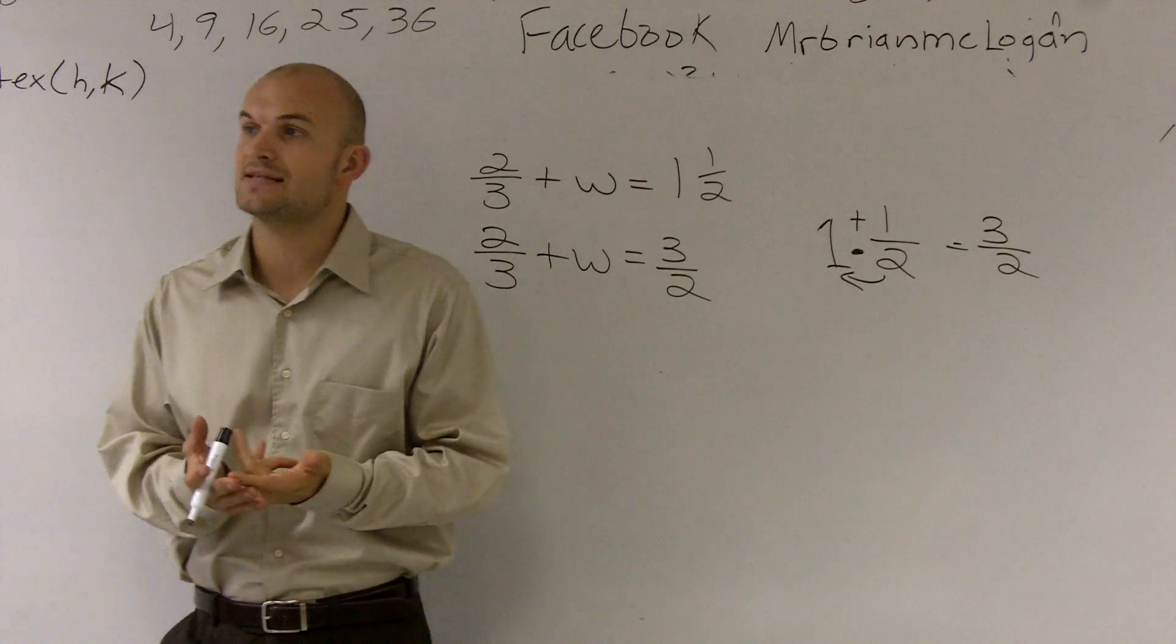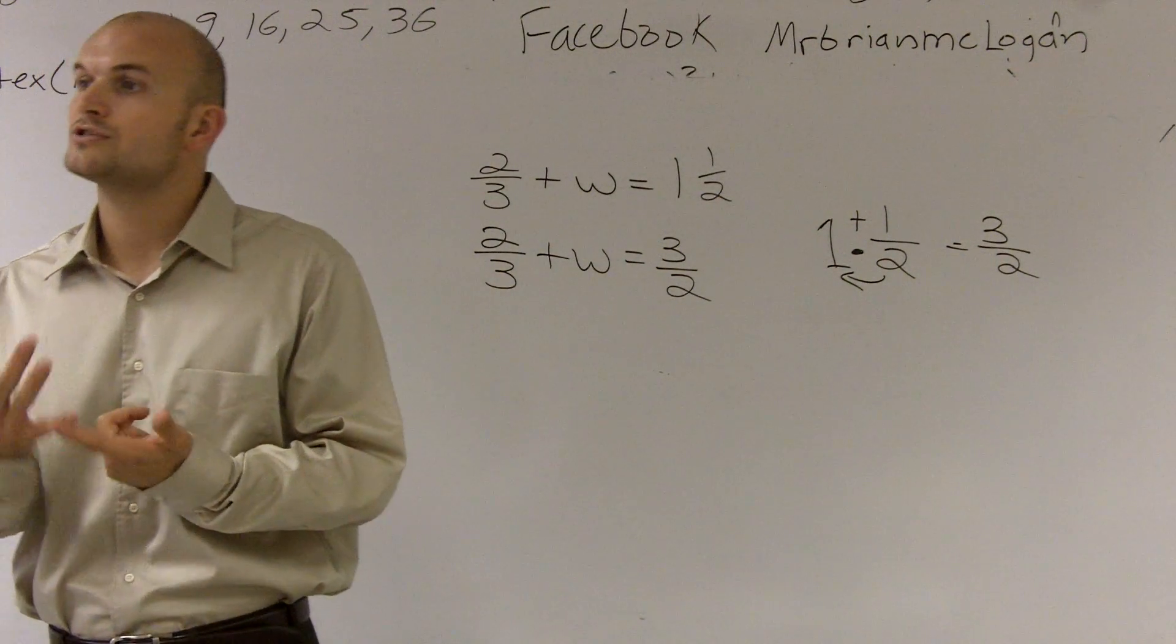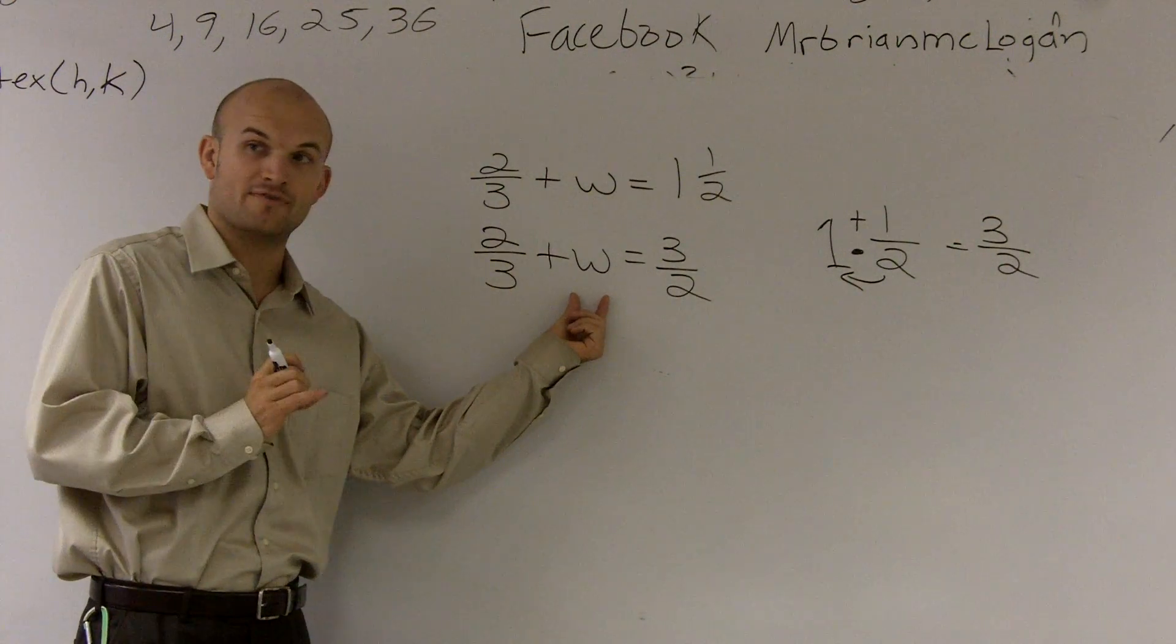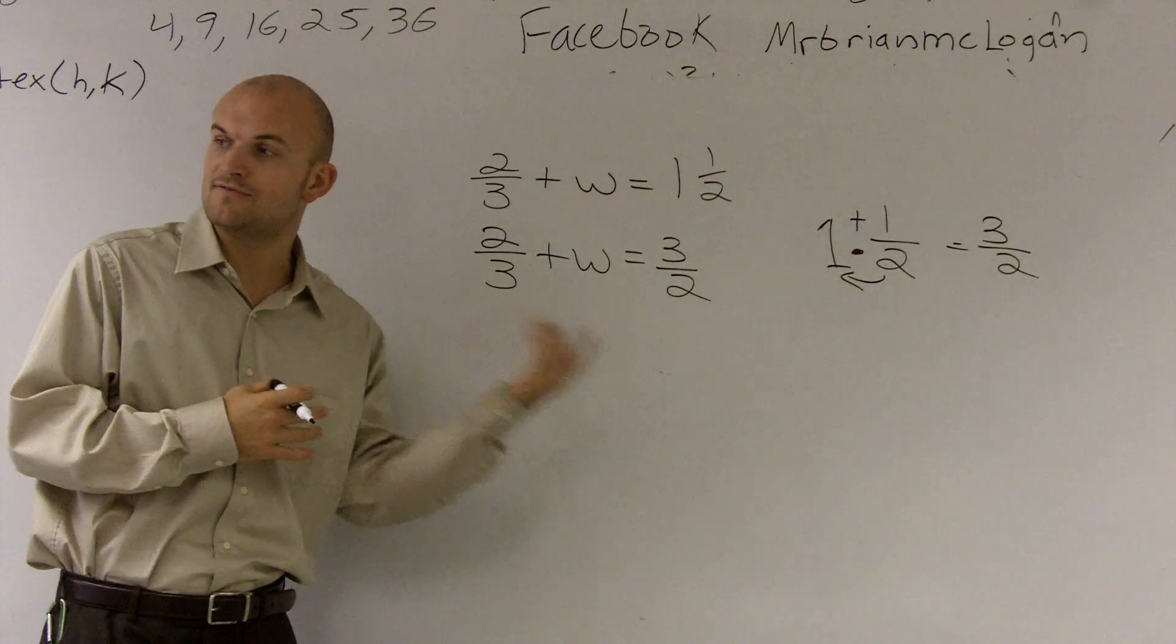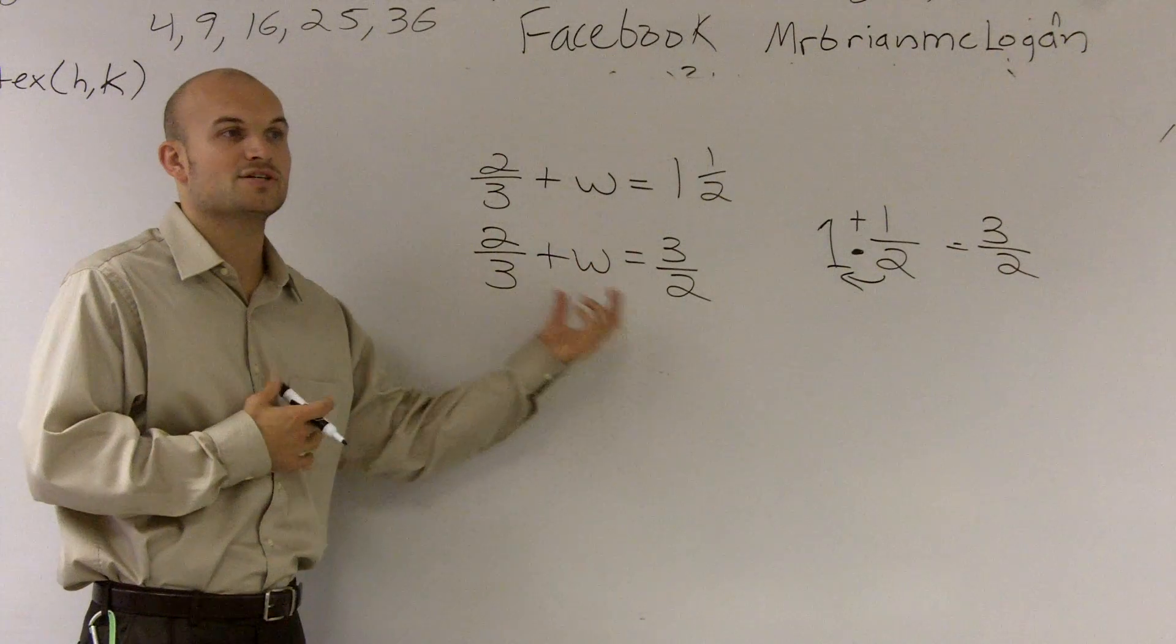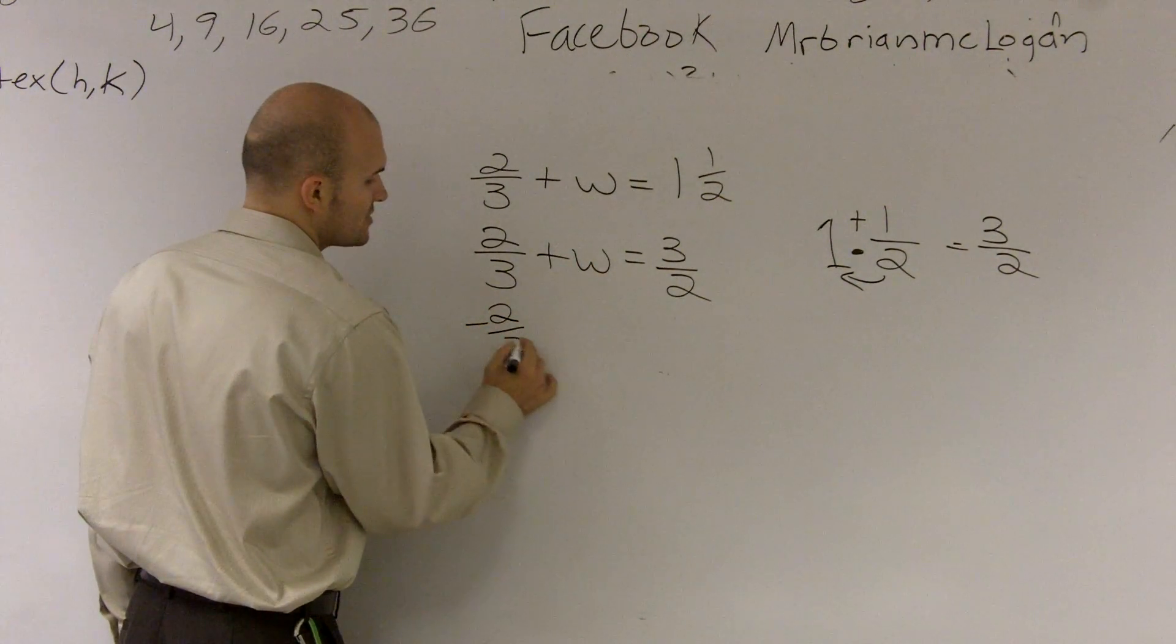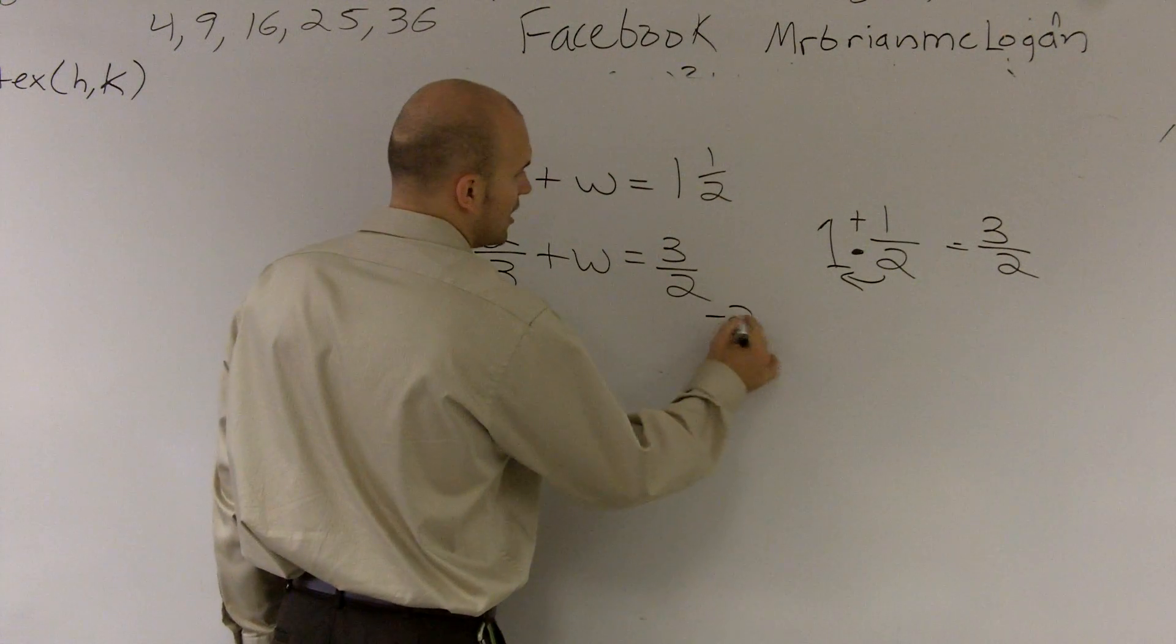So the opposite of that is now I'm going to actually have to subtract. So you always determine first what's happening to the variable. Then you need to determine what is the inverse operation. Well the inverse operation of addition would be subtraction. So I'm going to subtract 2 thirds from both sides of the equal sign.